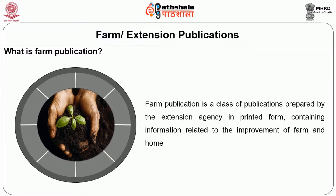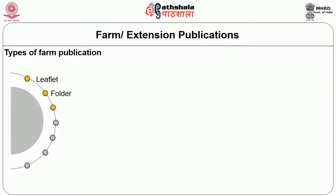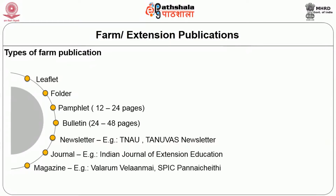Farm publication is a class of publications prepared by the extension agency in printed form, containing information related to the improvement of farm and home. Various types of farm publications include: leaflets, folders, pamphlets (which may run to 12 to 24 pages), bulletins, newsletters (for example TNAU or TANUMA's newsletter), journals (for example the Indian Journal of Extension Education), and magazines (for example Valarumbaya, Landmix, and others).